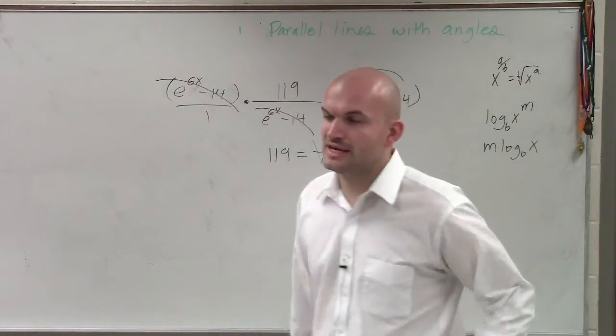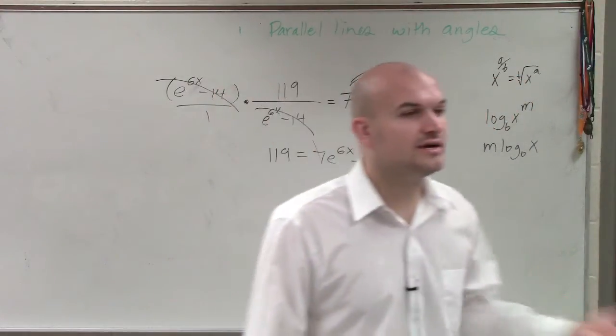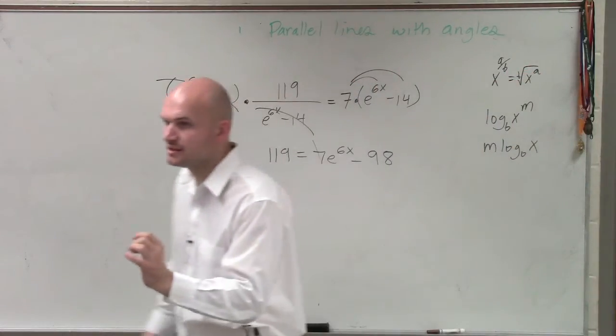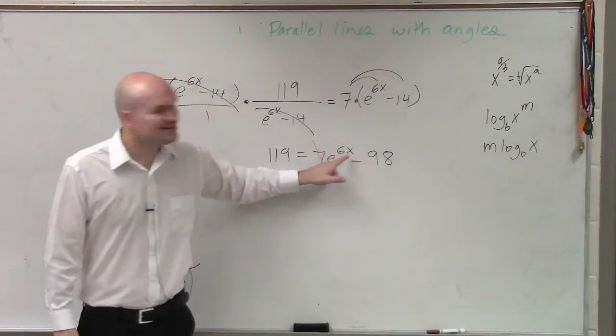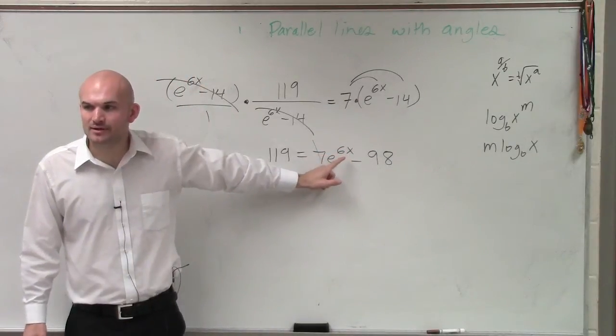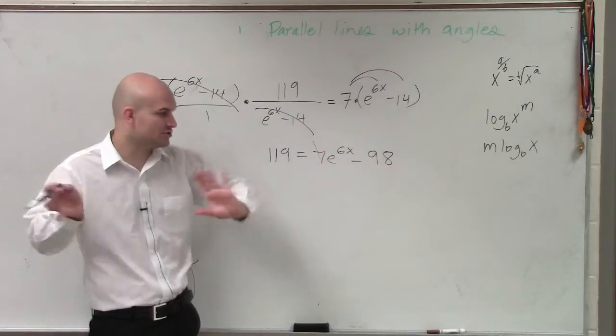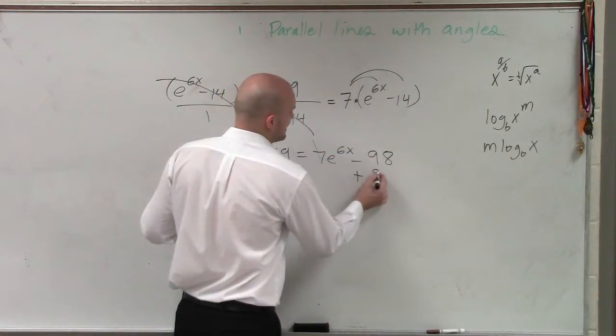All right. So now, ladies and gentlemen, we need to solve, right? Just like you guys did for algebra equations, we need to isolate that x. But the problem is, our x is contained in this exponent right up here. So what we're going to have to do is we're going to have to isolate our e to the 6x. And we'll show you what to do in here a second. So the first thing I'll do is I'll add 98.